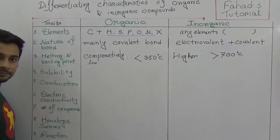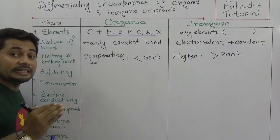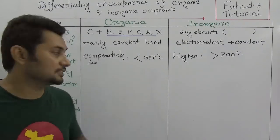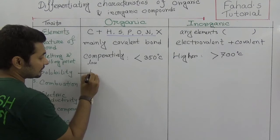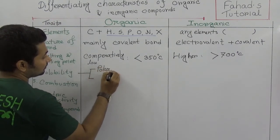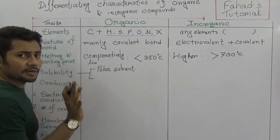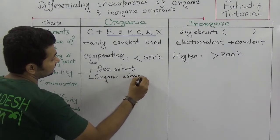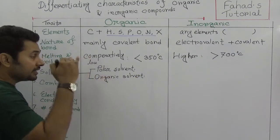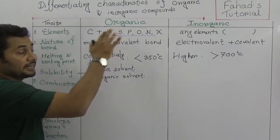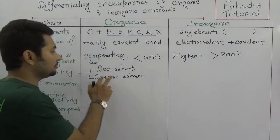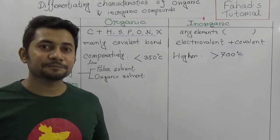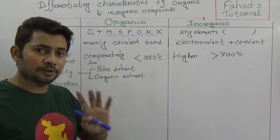Now we look at solubility. There are two types of solvents to consider: polar solvents like water, and organic solvents like benzene and ether. In case of organic compounds and polar solvents — organic compounds are usually not soluble in polar solvents like water. However, if a hydroxyl group is present, for example alcohol, then alcohol is soluble in water.